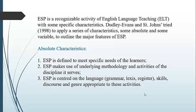The absolute characteristics are as follows. Number one: ESP is defined to meet the specific needs of the learners. Number two: ESP makes use of the underlying methodology and activities of the discipline itself. Number three: ESP is centered on the language — that is to say, grammar, lexis, register, skills, discourse, and genre — appropriate to these activities.